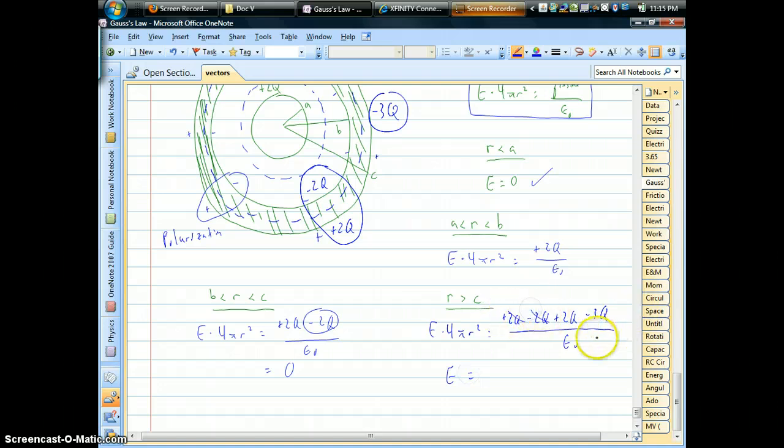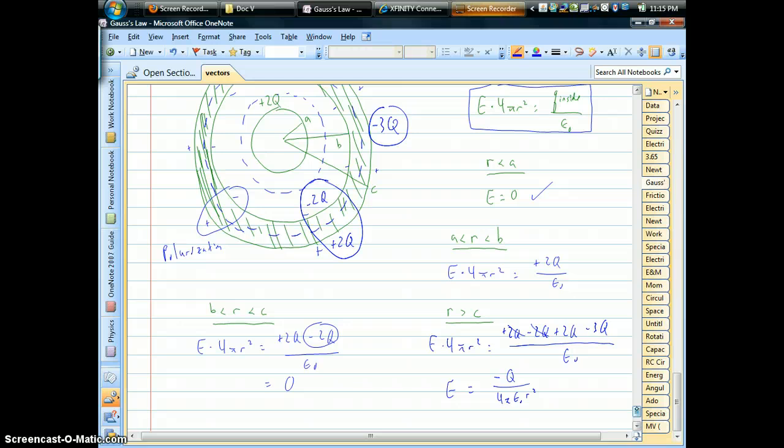Let's see. Some of those are going to cancel out. We're going to have a net total charge on the outer surface of negative Q over 4 pi epsilon r squared. So that would be electric field in the outer region.